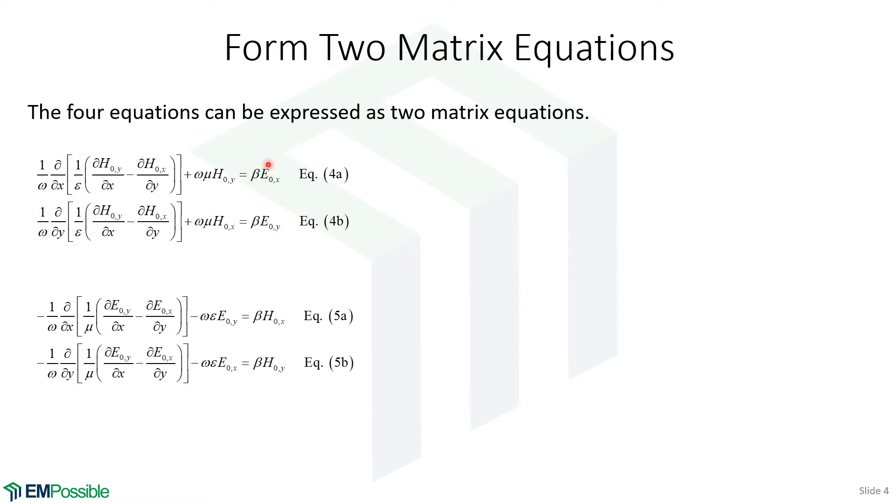This is a repeat of those bottom four equations from the last slide. The first two we'll look at have an E0x and an E0y on the right. And over here on the left, we have all magnetic fields. And these bottom two equations are the opposite. We have an H0x and an H0y on the right. And on the left, we have all electric fields.